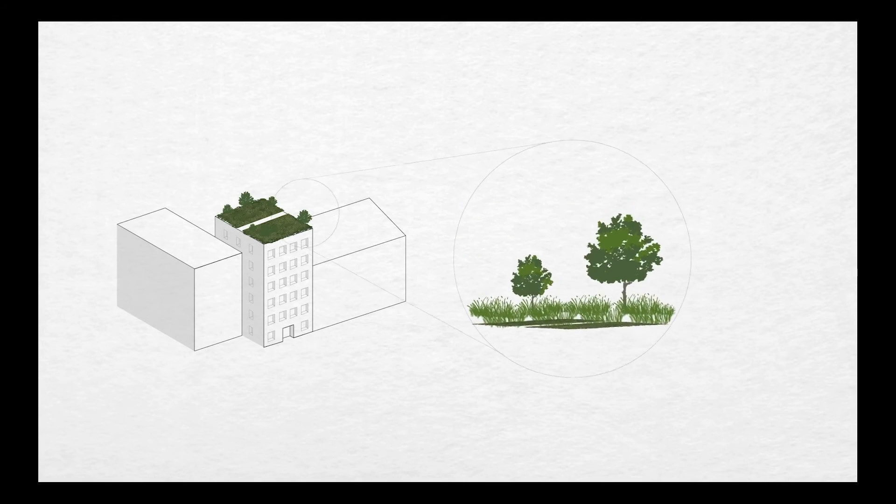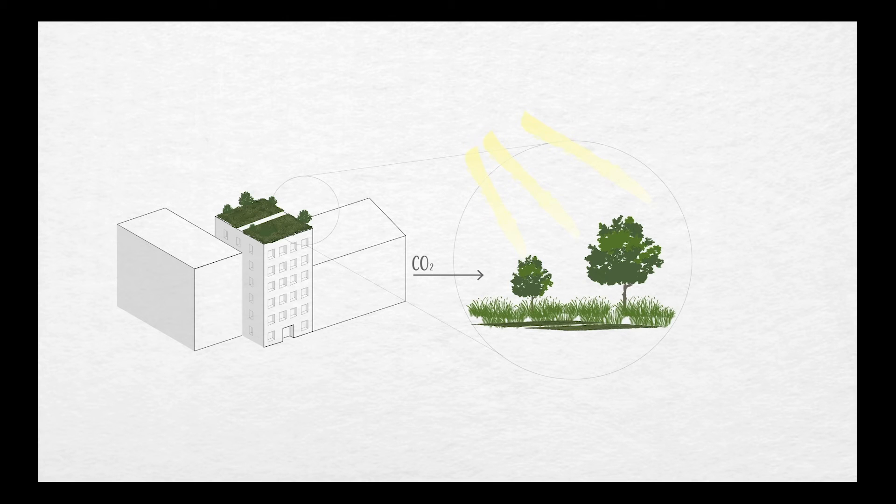Dense urban areas benefit from plants carrying out photosynthesis, producing oxygen, evaporating water, and thus having a cooling effect as well as filtering air pollutants from road traffic.